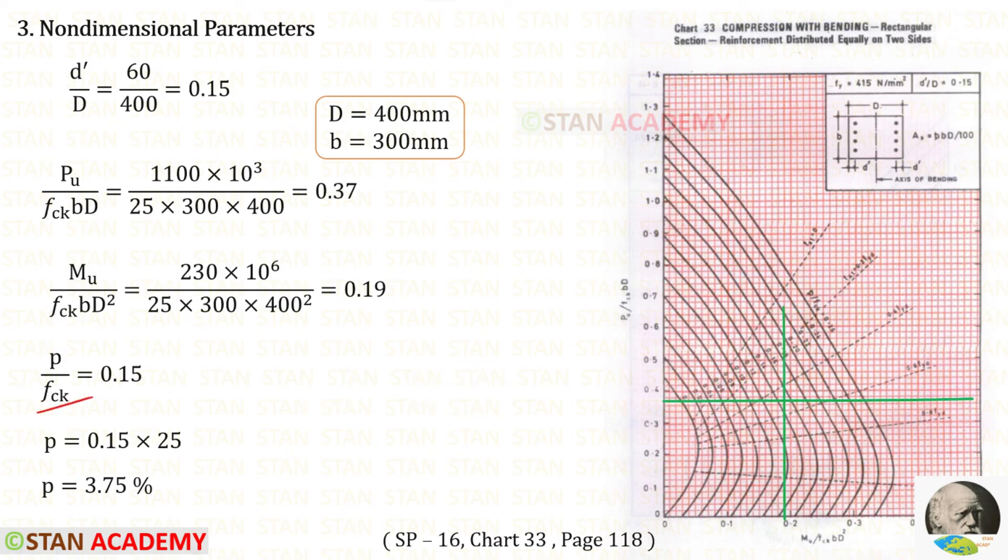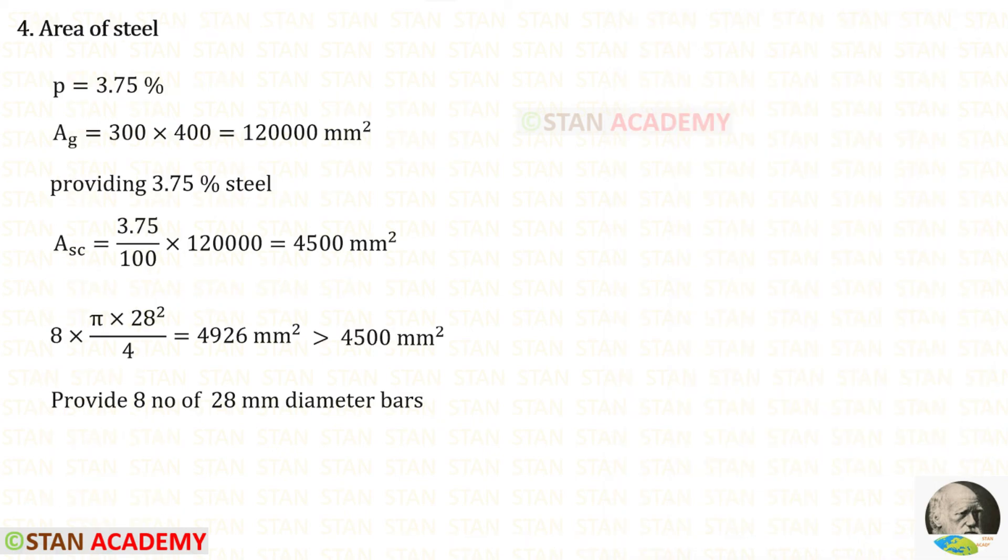We know the value of Fck is 25. Let us apply that. So that for p, we will get 3.75. Now let us find the gross area Ag. When we multiply both sides B and D, we will get the gross area. We know that the percentage of steel is 3.75. So 3.75 upon 100 into gross area, we will get the area of the steel as 4500 mm square.